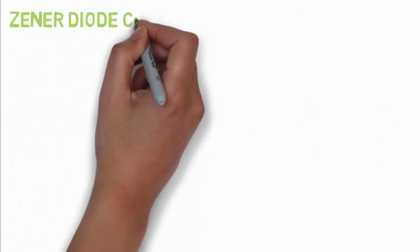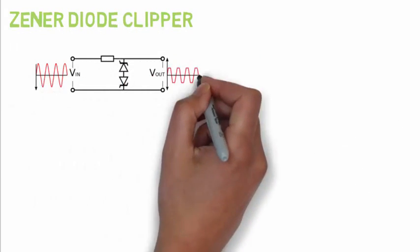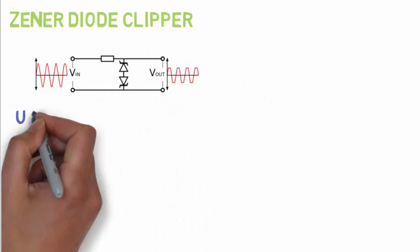Coming on to the other types of clipper, as discussed earlier, we have zener diode clipper and this is how a zener diode clipper circuit looks like. It is used to clip the voltage in either direction.